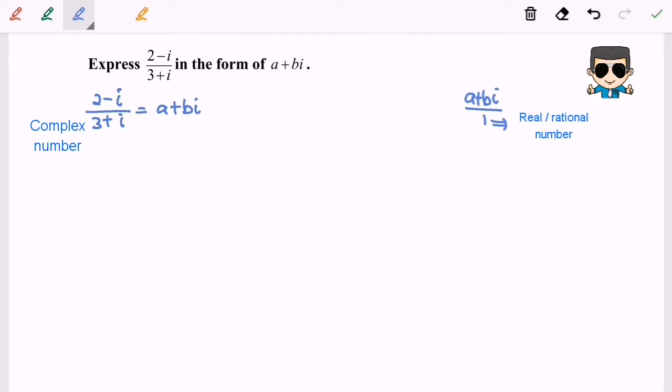So what we have to do is rationalize the left hand side. So 2 minus i over 3 plus i multiply with the conjugate. So 3 minus i would be the conjugate.